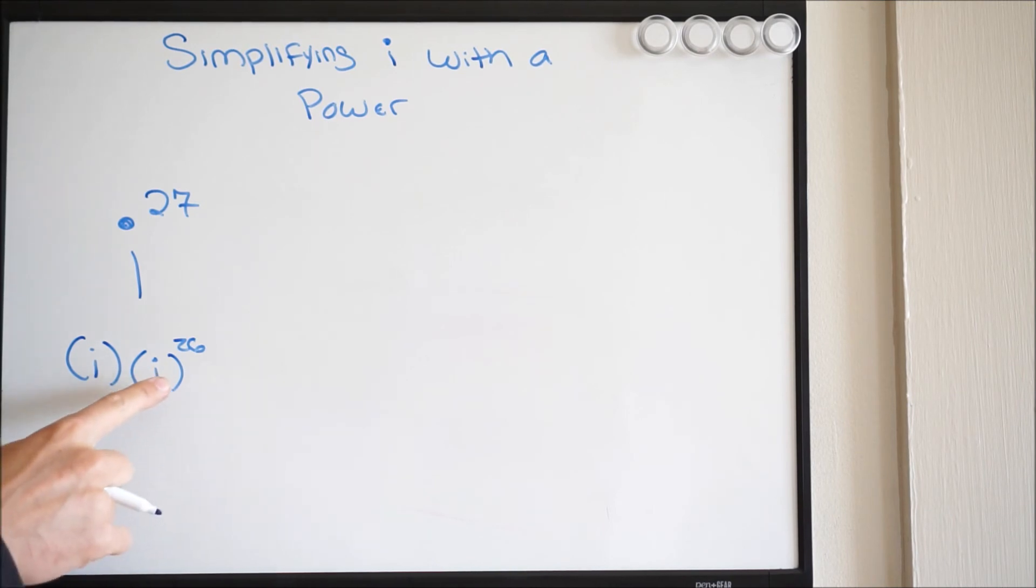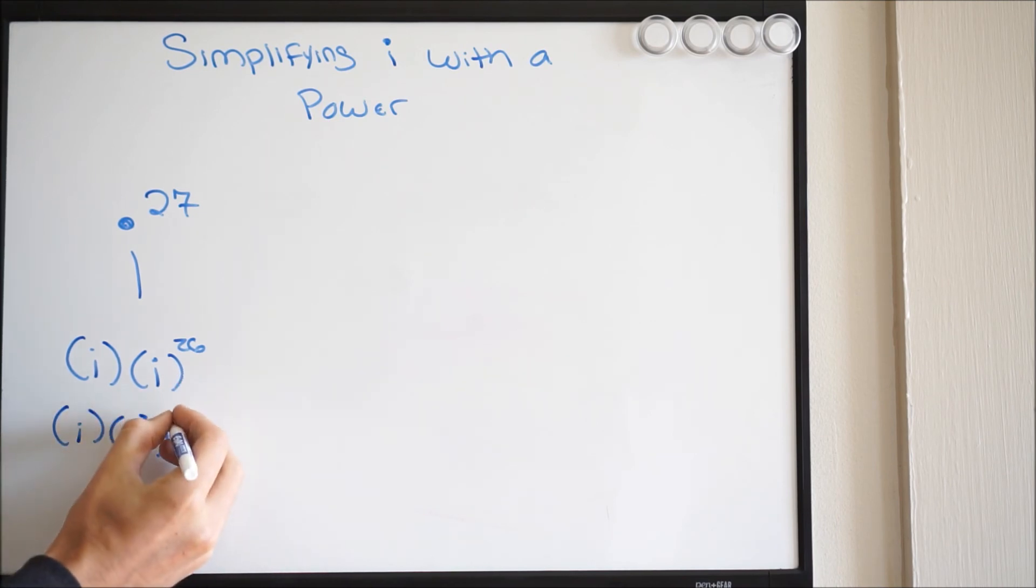So what we can do here now is what we just did. So we write, we have i, then I'll say here i squared, and then I'll put 13 here.